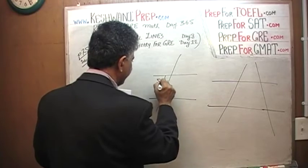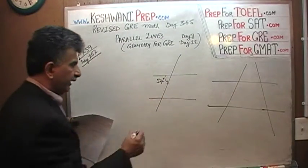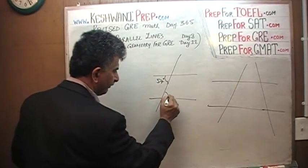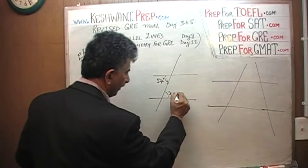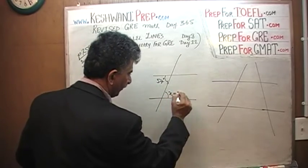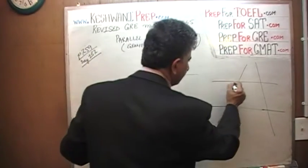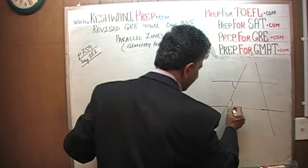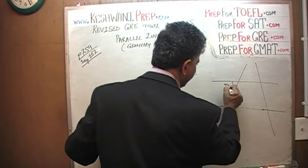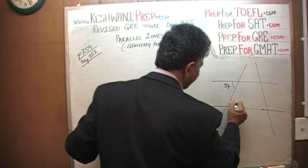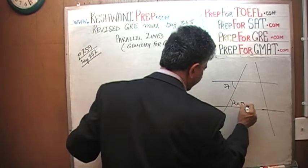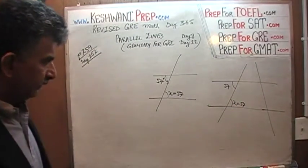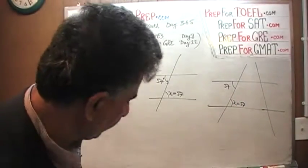We are told that this angle is 57. If this is 57, then this must also be 57 — X will also have to be 57. In other words, these two angles are equal to each other. This is 57, we're told this is X, therefore X equals 57. That takes care of X.